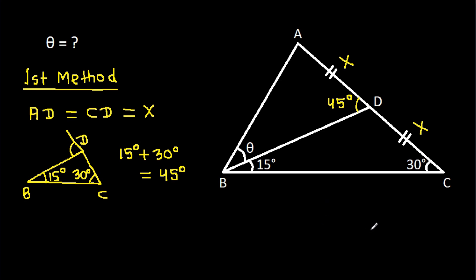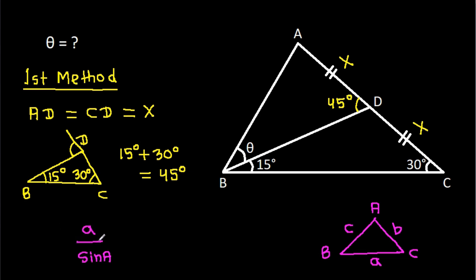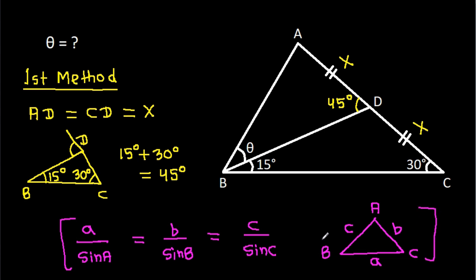Now, in any triangle ABC, if BC is side a, AC is side b, and AB is side c, then by the sine rule: a over sin A equals b over sin B equals c over sin C.